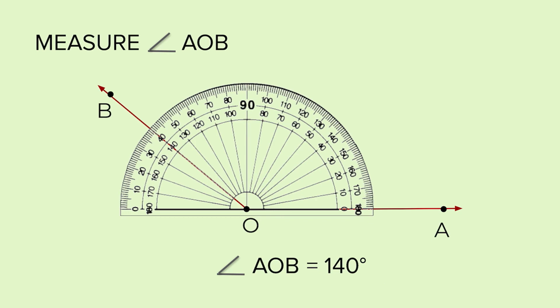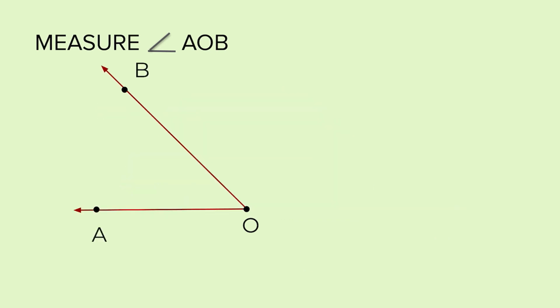In the two examples that we have just seen, the base ray is on the right of the vertex. So we are reading the inner circle reading. Let's suppose the base ray is on the left of the vertex.